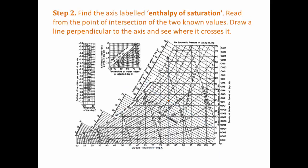We can now find the enthalpy of saturation. Find the axis labeled as enthalpy of saturation. Look at the orange dot which defines the state of the air. Go in the direction of the lines coming off the axis and see where the point would cross the axis. The enthalpy of saturation is 31.6 BTU per pound of dry air.